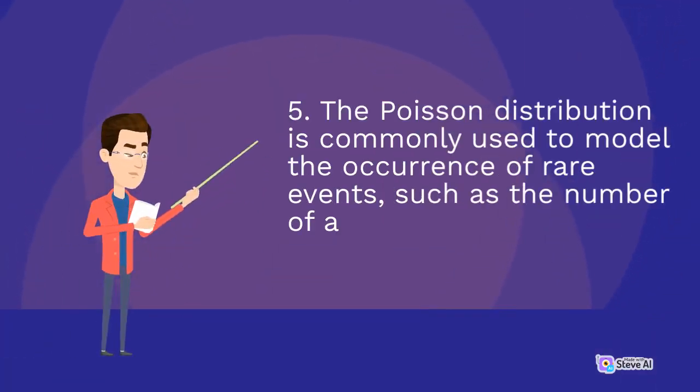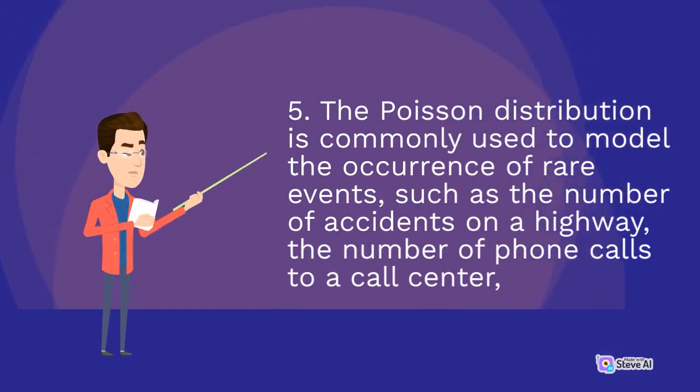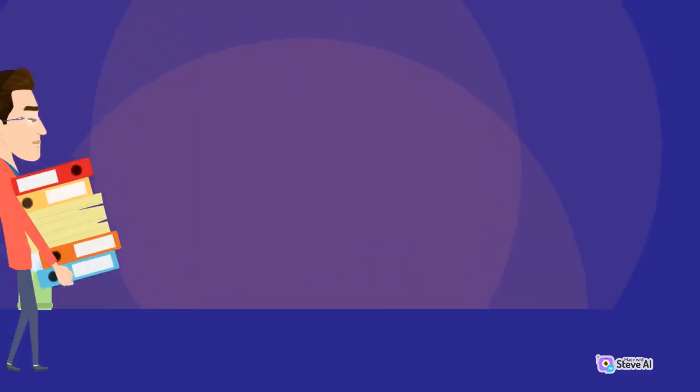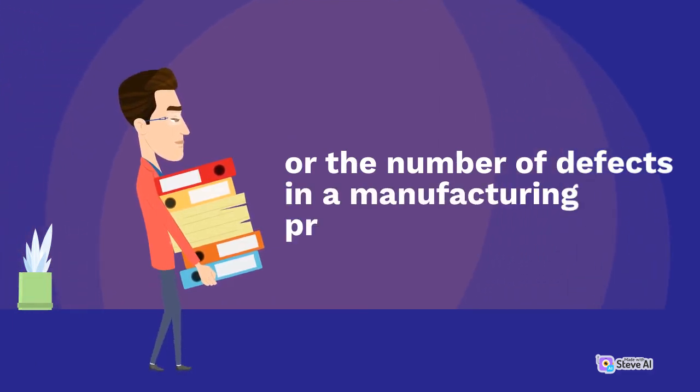5. The Poisson Distribution is commonly used to model the occurrence of rare events, such as the number of accidents on a highway, the number of phone calls to a call center. 6. Or the number of defects in a manufacturing process.